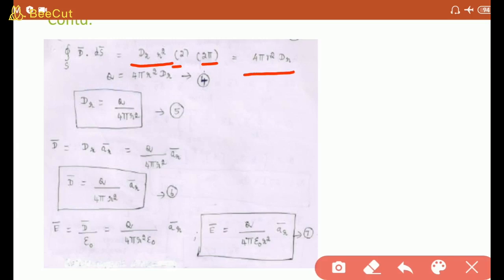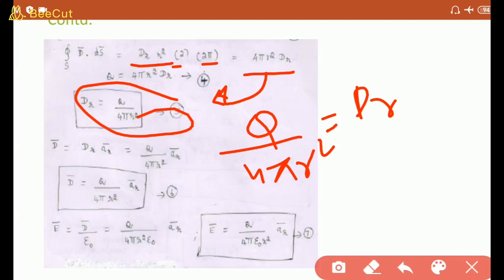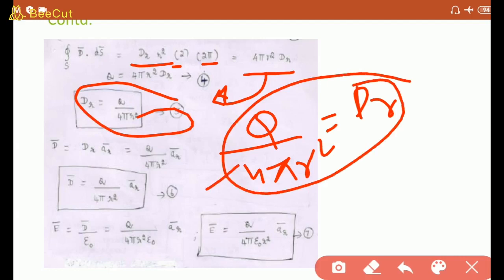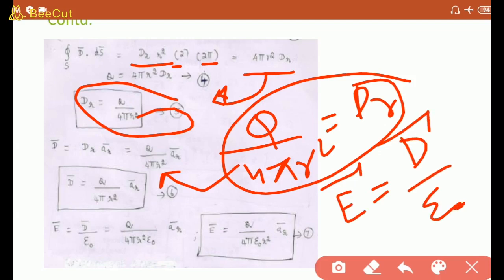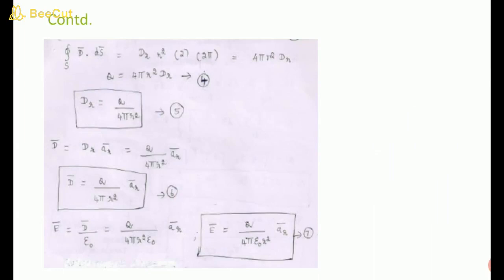This becomes the fifth equation. D vector is D_r · a_r, so D_r (just found) is fit into this relation, giving the sixth equation. For electric field, E = D / ε₀ from the previous class. Substituting D vector (from equation 6) into E = D/ε₀, we get the E vector. This is how we set up the D and E relationship using Gauss law. This is frequently asked in short questions.